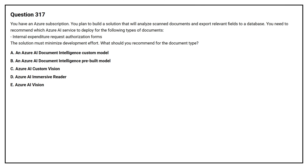Question number 317. You have an Azure subscription. You plan to build a solution that will analyze scanned documents and export relevant fields to a database. You need to recommend which Azure AI service to deploy for the following type of document: internal expenditure request authorization forms. The solution must minimize development effort. What should you recommend? Option A: An Azure AI Document Intelligence custom model. Option B: An Azure AI Document Intelligence pre-built model. Option C: Azure AI Custom Vision.